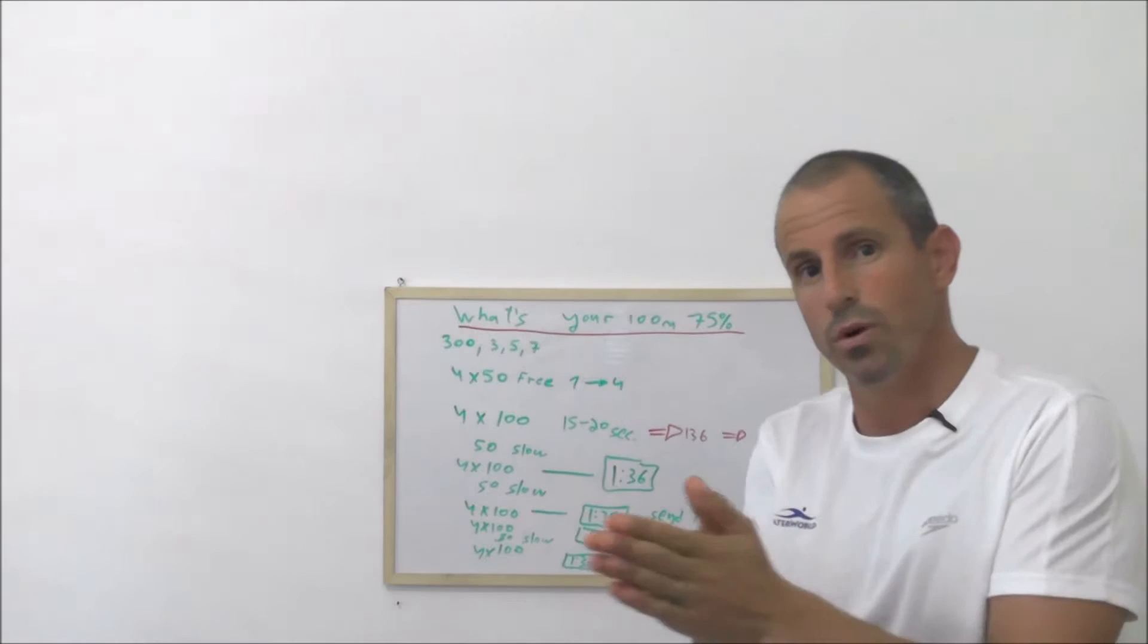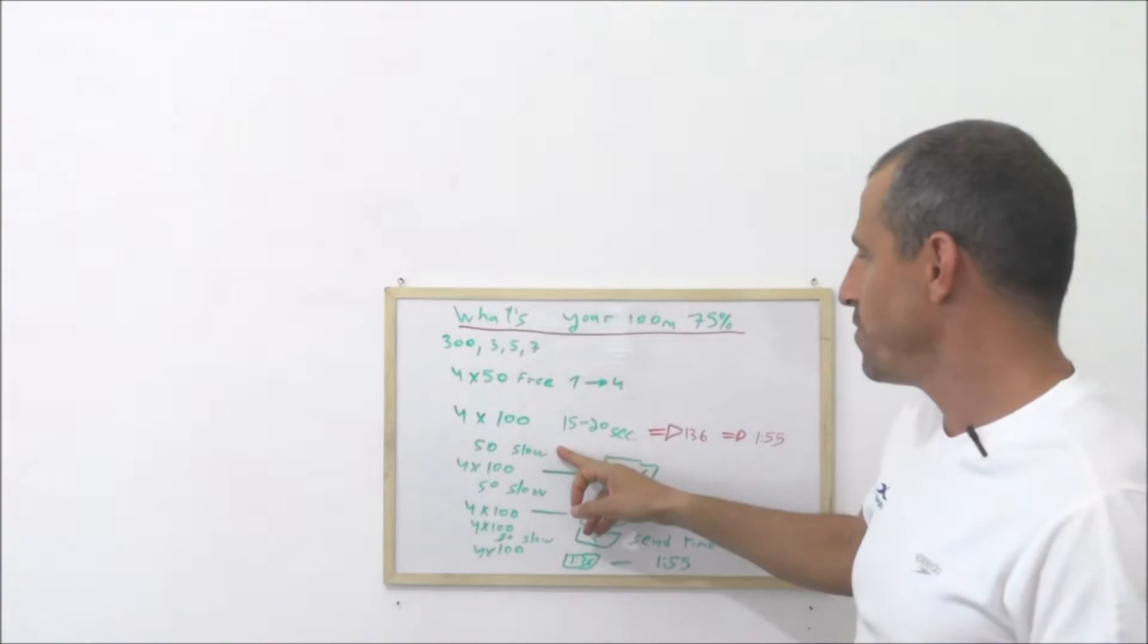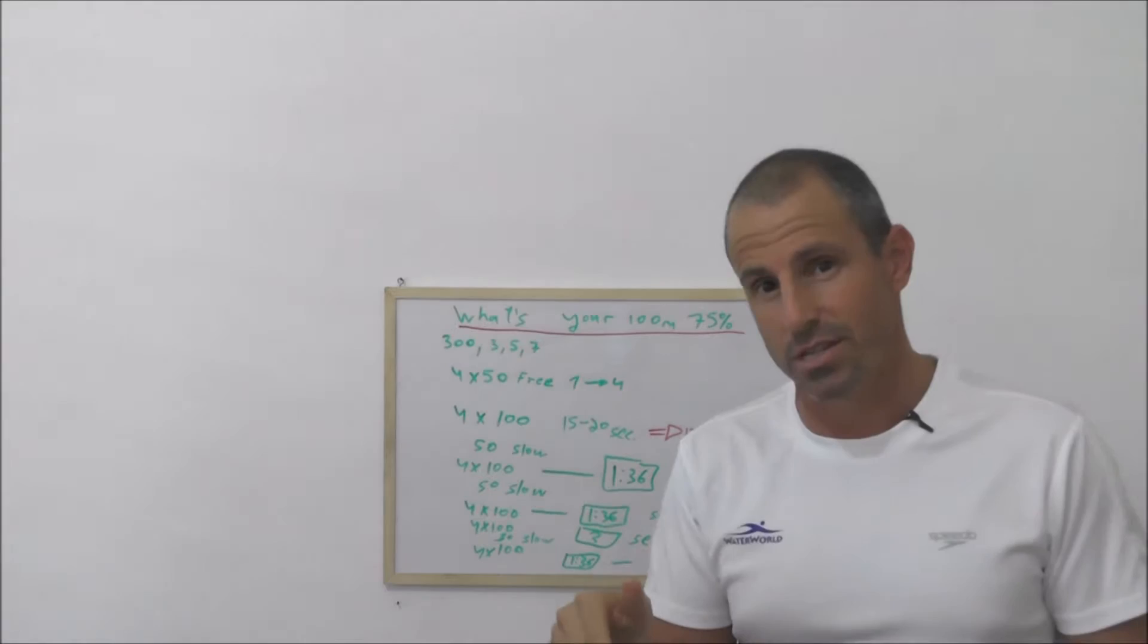You're gonna try to see if you can control each 100 in 1:36. You're probably not going to succeed and it's okay, but try to control it. Then we're gonna do 50 slow, and after you didn't succeed exactly in 1:36 because you probably started the first 100 pretty fast like everybody does.